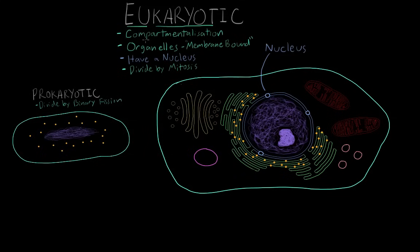So these are the defining characteristics of eukaryotic cells that set them apart from prokaryotic cells: they're compartmentalized into different membrane-bound organelles, the most important of which is called the nucleus, which is responsible for the name eukaryotic. And finally, they divide by the process of mitosis.